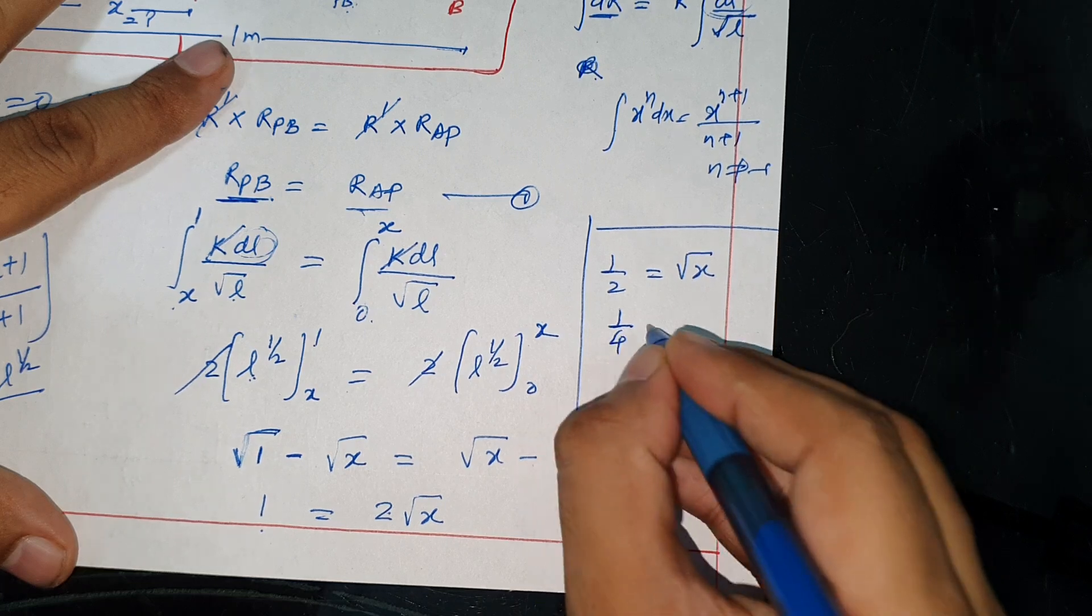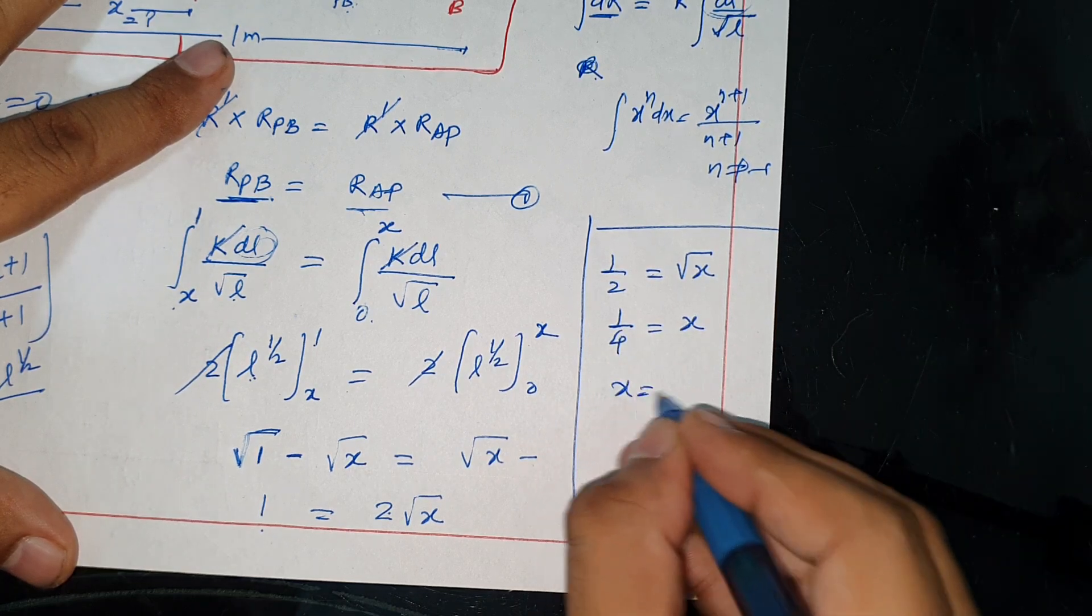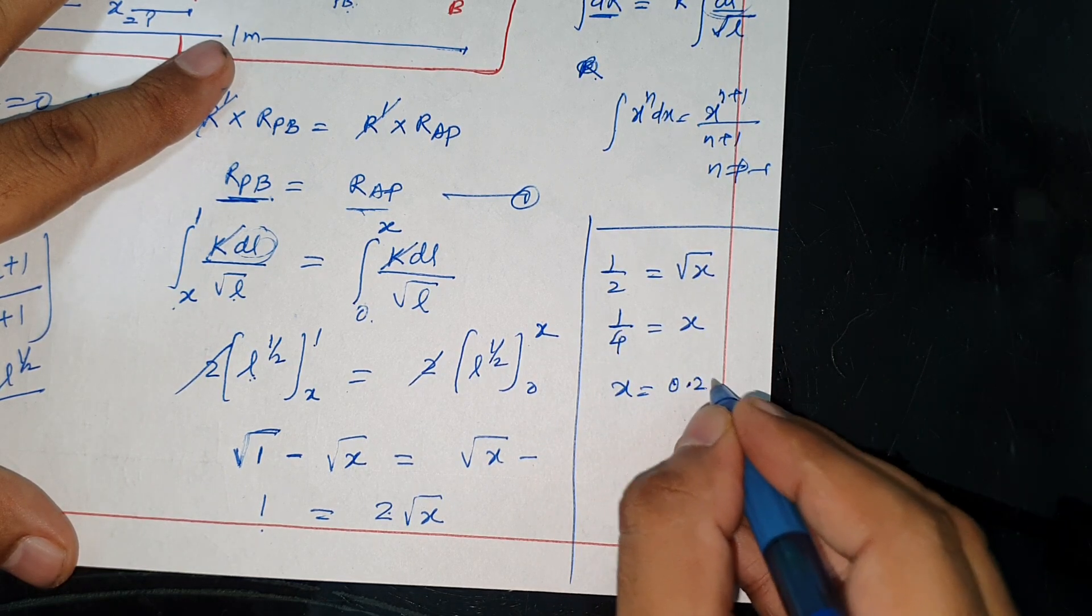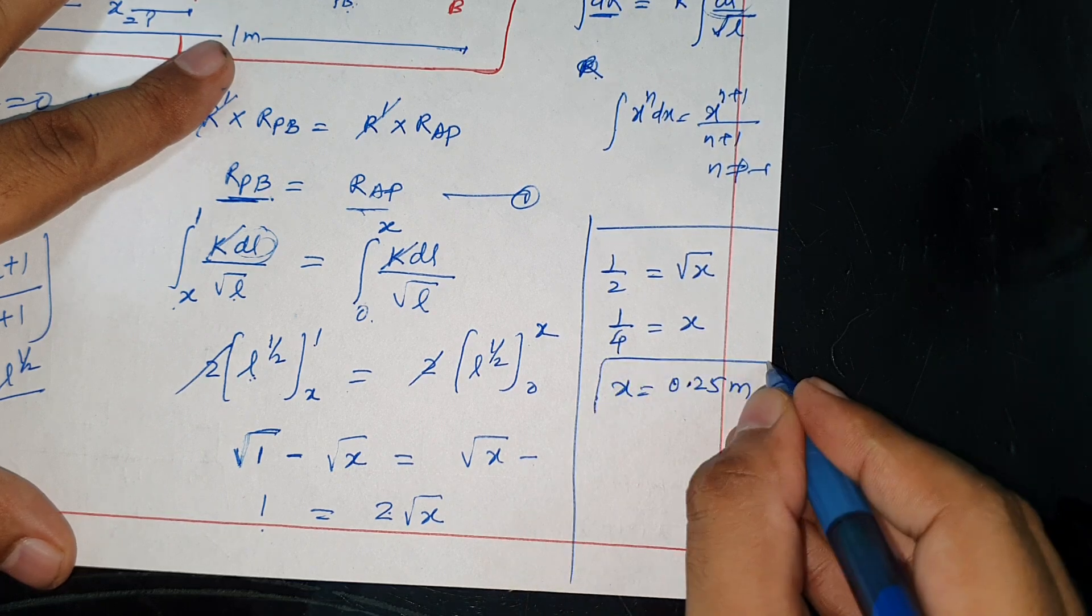Therefore, X equals one-quarter meter, or 0.25 meter. So the answer is option C.